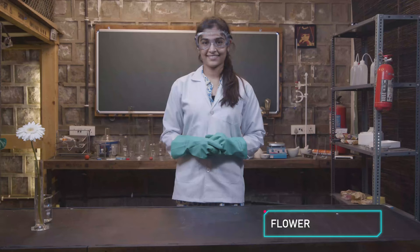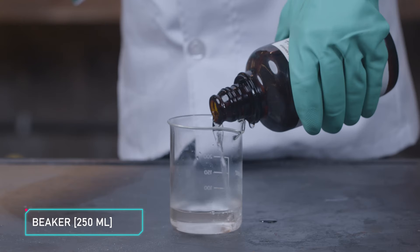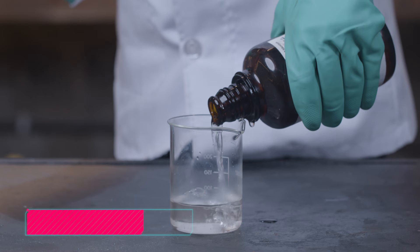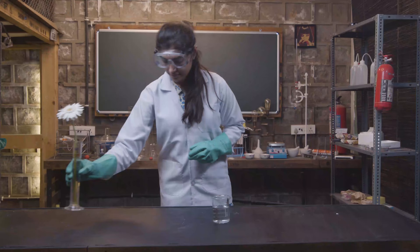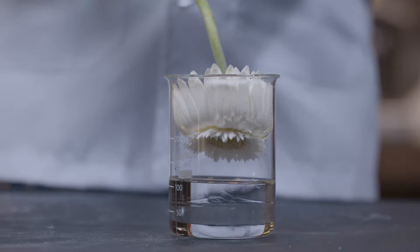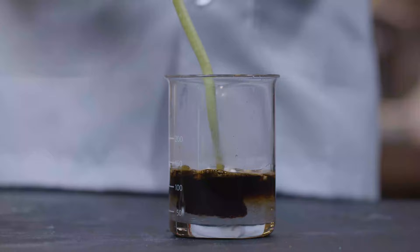First, we'll experiment with a flower. Take a beaker and pour in sulfuric acid till the half mark. Now grab your freshest favorite flower and dip it into the beaker. Do you observe how it wilts almost instantly and turns into this black liquid?